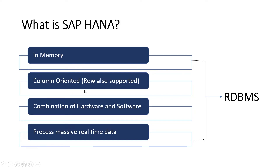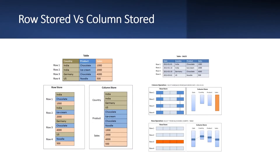By default, SAP HANA is a column-oriented database, but row-based storage is also supported. Let's talk about the basic difference between row-stored and column-stored databases. Traditional relational databases typically use row-based data storage. However, column-based storage is more suitable for many business applications, and SAP HANA supports both, but is particularly optimized for column-based storage.